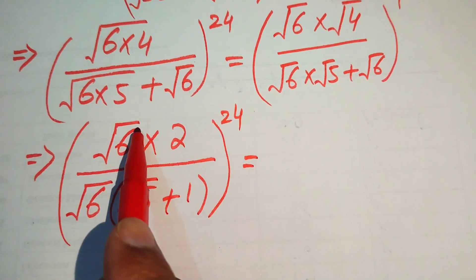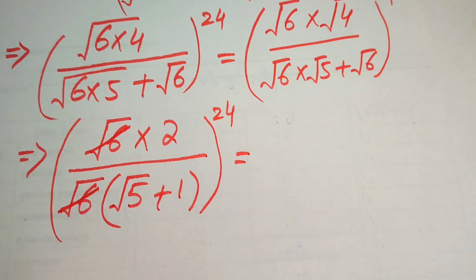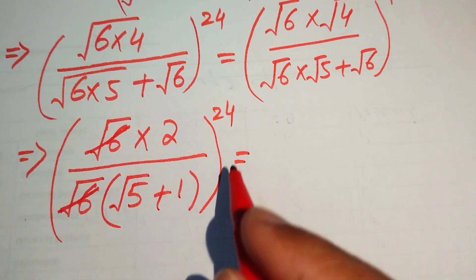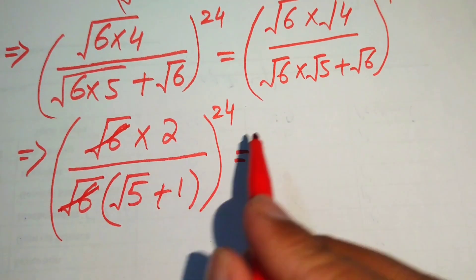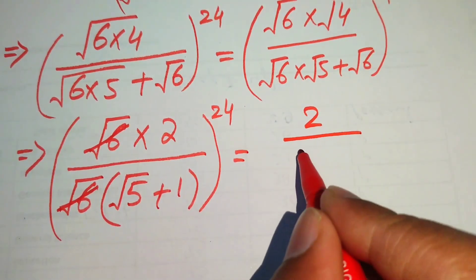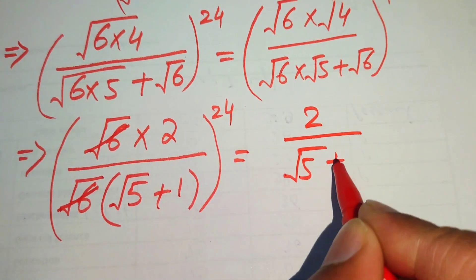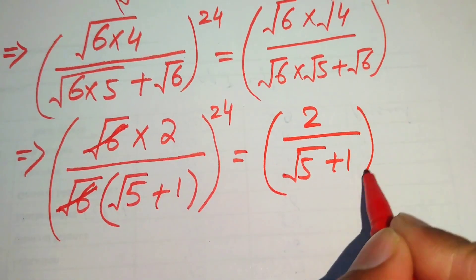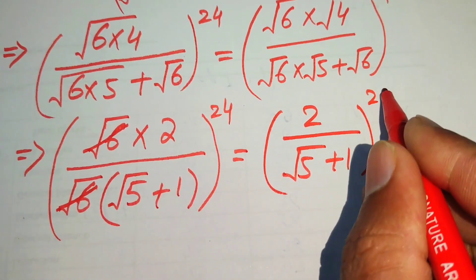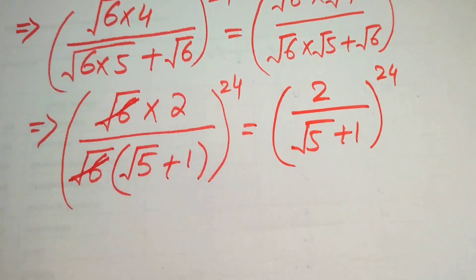The square root of 6 in the numerator and denominator cancel out, and the remaining expression is 2 over (square root of 5 plus 1), and its whole exponent is 24.